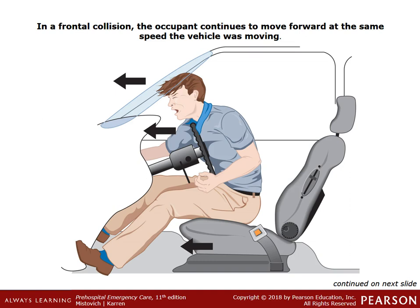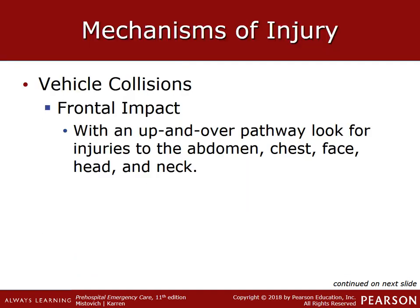If unrestrained and the vehicle travels in an up-and-over direction, the occupant may be ejected. A damaged dashboard or steering wheel should cause you to suspect abdominal injuries, as the abdomen strikes the dashboard or steering wheel. The liver, spleen, and hollow organs of the abdomen are compressed between the front and back abdominal walls and the spine. The hollow organs are more easily displaced, leaving the solid liver and spleen to bear the brunt of the compression.